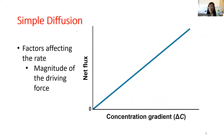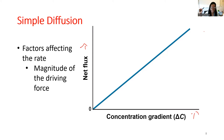Continuing on, we're going to elaborate on those factors for simple diffusion. The first factor is the magnitude of the driving force — in other words, how strong is that concentration gradient. As we can see from this graph, if the concentration gradient increases, so does the net flux. That's the linear curve that represents simple diffusion.